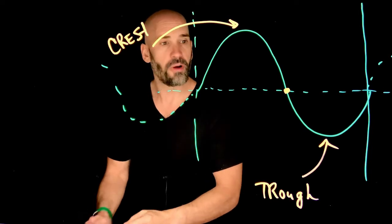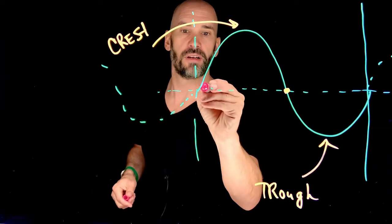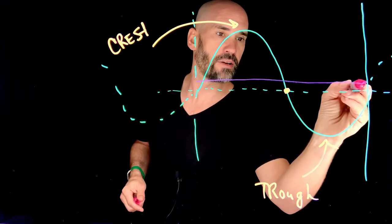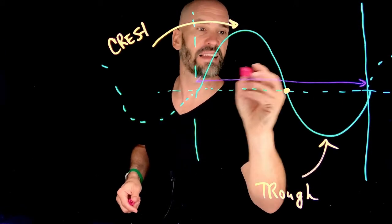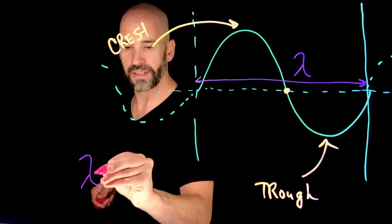So waves also have a wavelength. They have a certain length. And so from here all the way to here, there's a certain length. And that length is called lambda, the Greek letter lambda. So lambda equals wavelength.